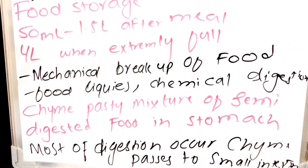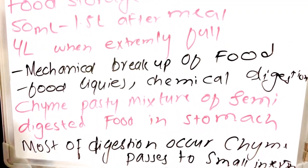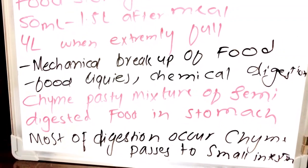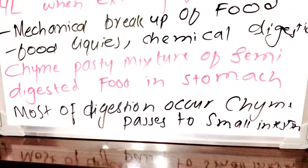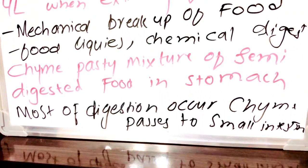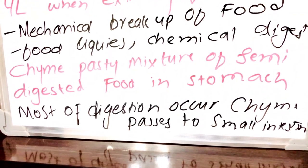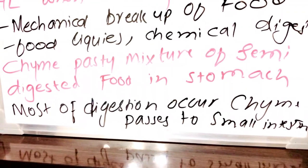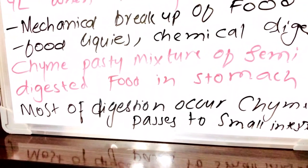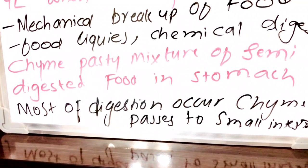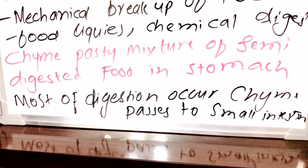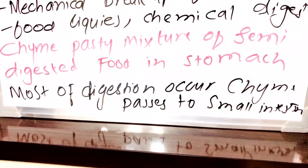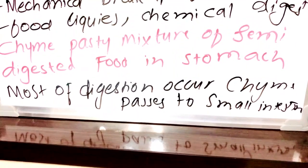In the stomach, mechanical breakdown of food occurs and food is liquefied through chemical digestion. When we intake food it becomes a bolus, which moves down to the stomach. When the bolus mixes with chemicals and chemical digestion starts, it is called chyme — a plastic mixture of semi-digested food in the stomach. Most digestion occurs in this form of chyme, after which the chyme passes into the small intestine.